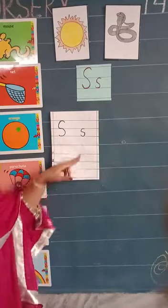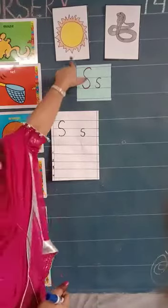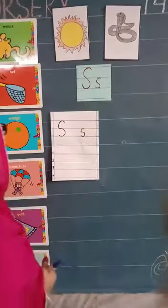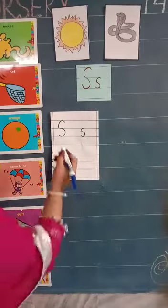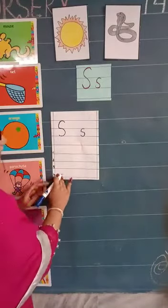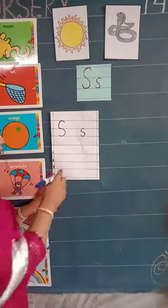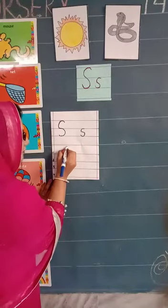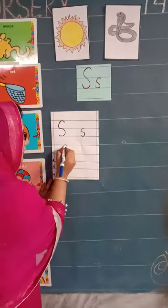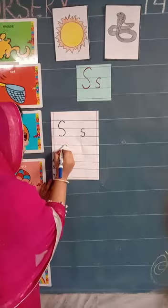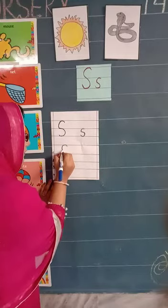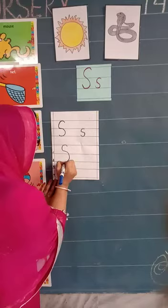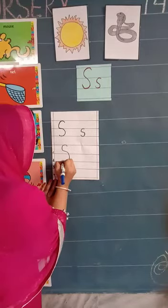S is sun and again snake. Now how to write capital S and small s without dots. Start from the first line and we will draw a semi circle first. Round, round, round. And we will touch the third line. And then small s: up, up, up and touch.